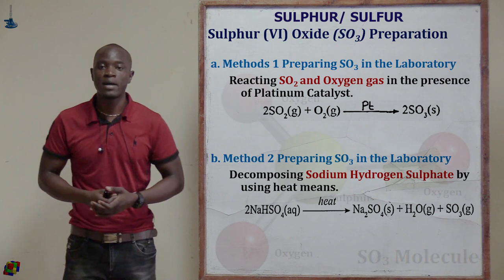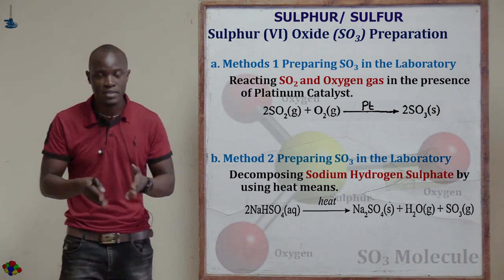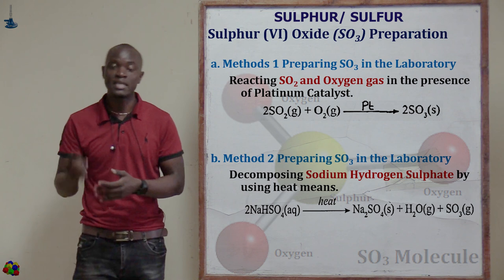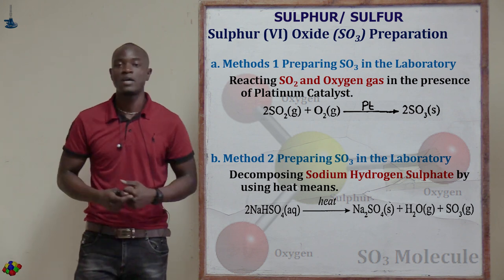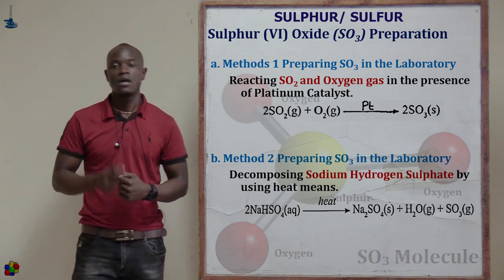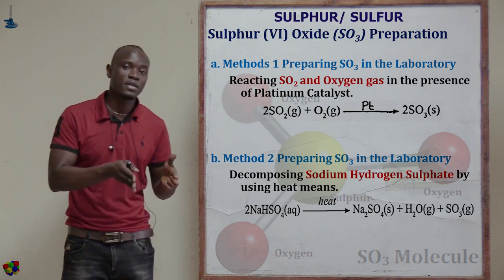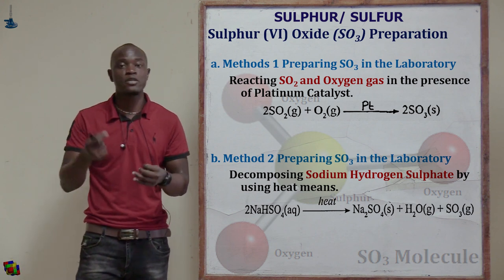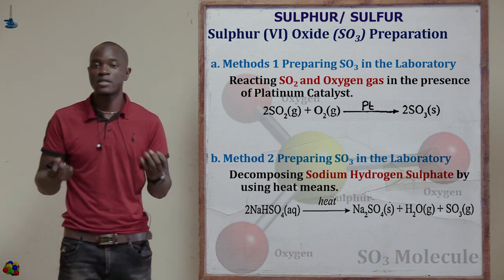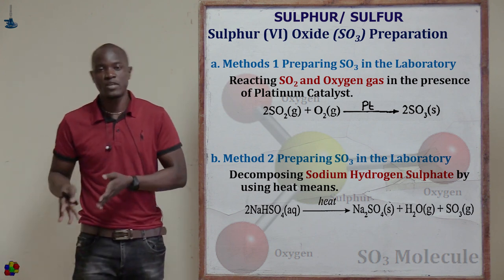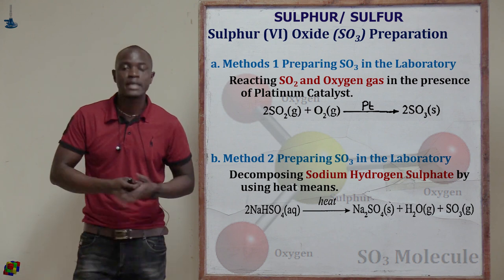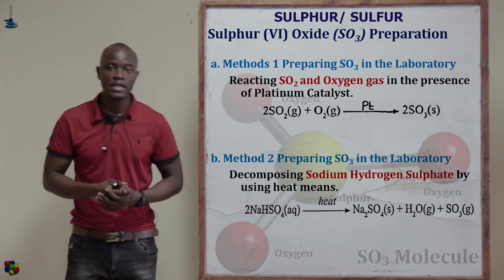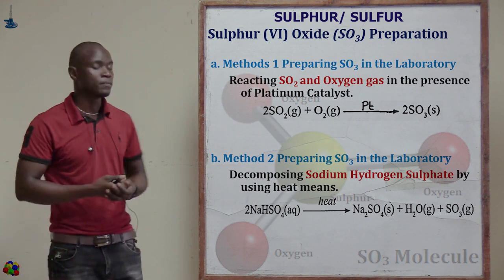So to summarize: the first method involves reacting sulfur 4 oxide with oxygen in the presence of a catalyst to get sulfur 6 oxide. The second method involves decomposing sodium hydrogen sulfate to get sodium sulfate, water molecules, and sulfur 6 oxide in gaseous form.